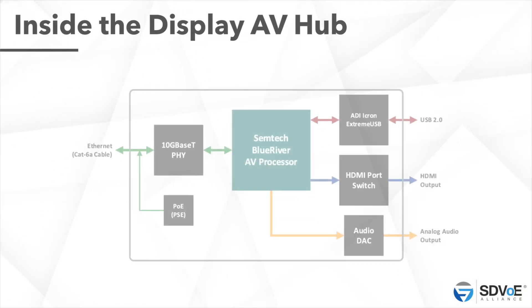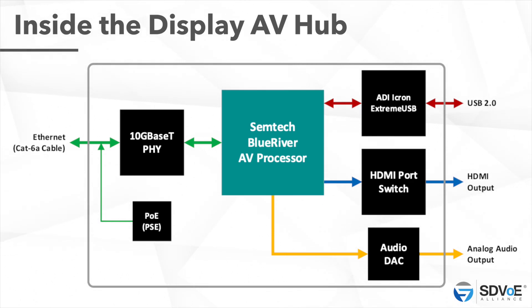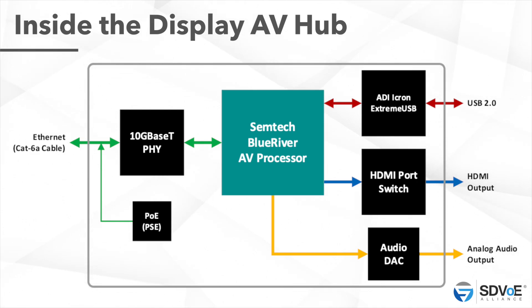At the other end of the link, your Ethernet cable comes in and we have support for HD or 4K displays via HDMI. Paired with the ICRON USB device, it provides seamless USB 2.0 connectivity supporting your highest-quality conferencing cameras and audio. You can optionally provide analog audio outputs — the Blue River chip supports that — to power in-wall or in-ceiling speakers, or simply use HDMI embedded audio with the room display's speakers. This display hub is designed as the PoE power-sending equipment, remotely powering the tabletop box with no additional power connectivity needed.